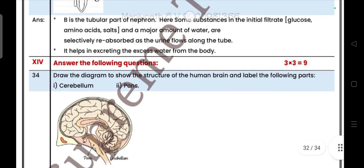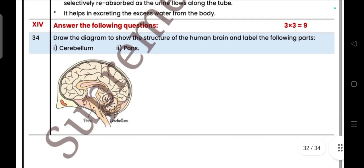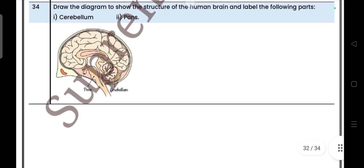Next, three mark question. Draw the diagram to show the structure of human brain and label the following: cerebellum and pons.